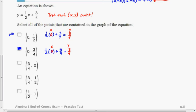If I put 3 fourths in for x, so 1 half times 3 fourths plus 3 fourths. Let's see what this equals. Does it equal 0?